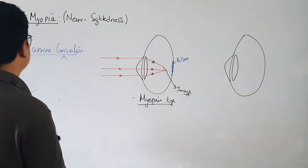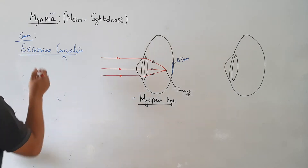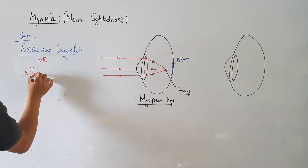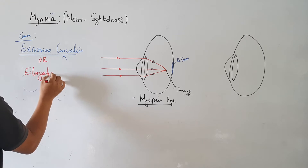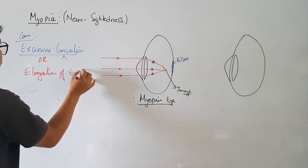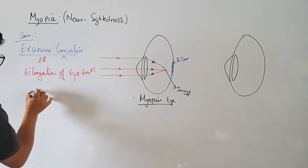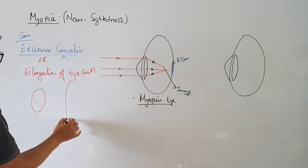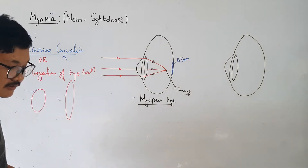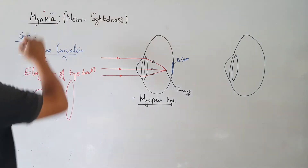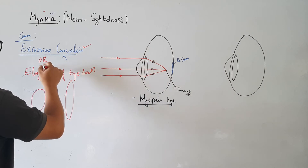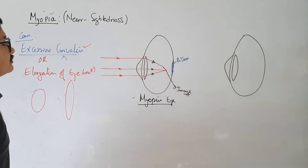The other cause is elongation of the eyeball. So there are two reasons: one is excessive curvature of the lens, and the other is elongation of the eyeball. When the eyeball elongates, the distance between the lens and retina increases, so the image falls in front of the retina.